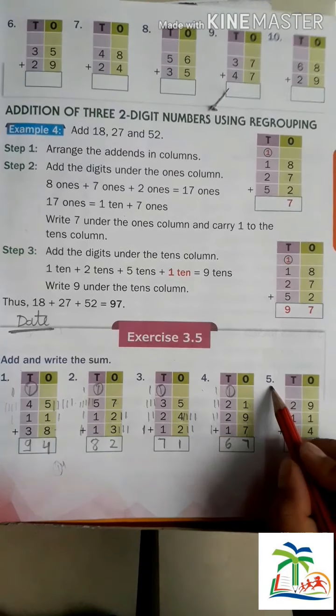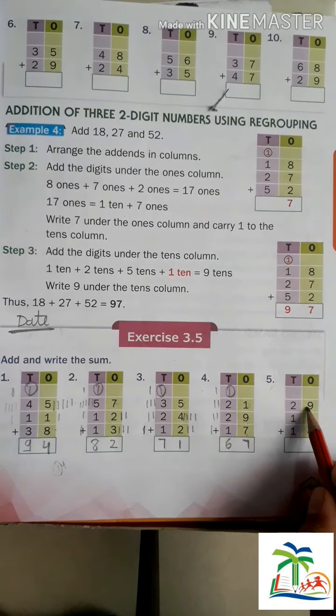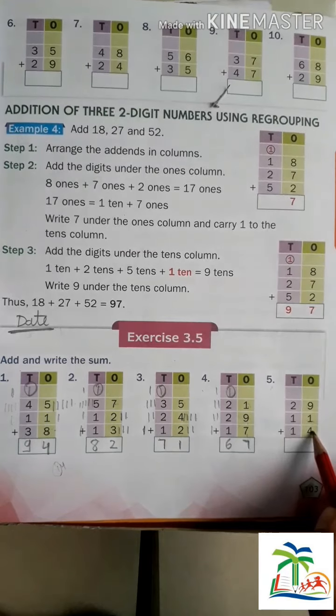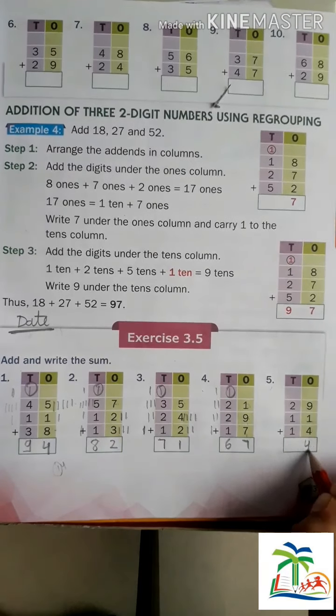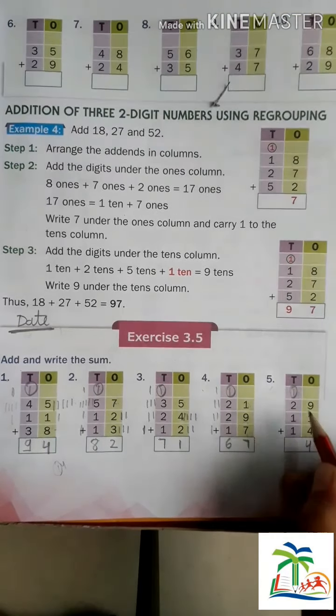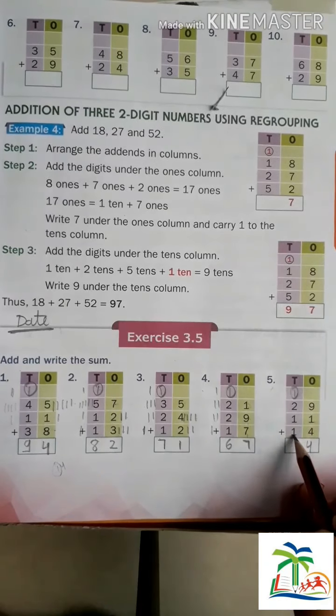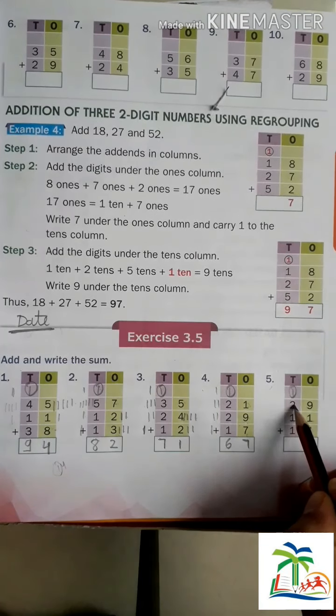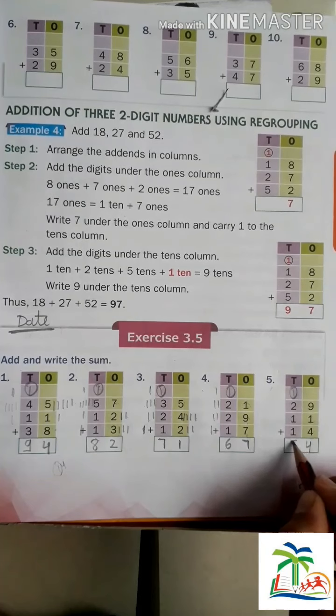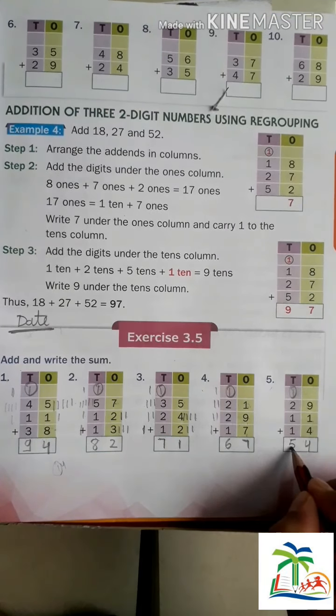Question number 5. Again 9 plus 1 is 10. 10 plus 4 is 14. Write down 4 here and 1 here. Now count these numbers: 1 plus 1 is 2, 2 plus 2 is 4, 4 plus 1 is 5. What we get here? 54.